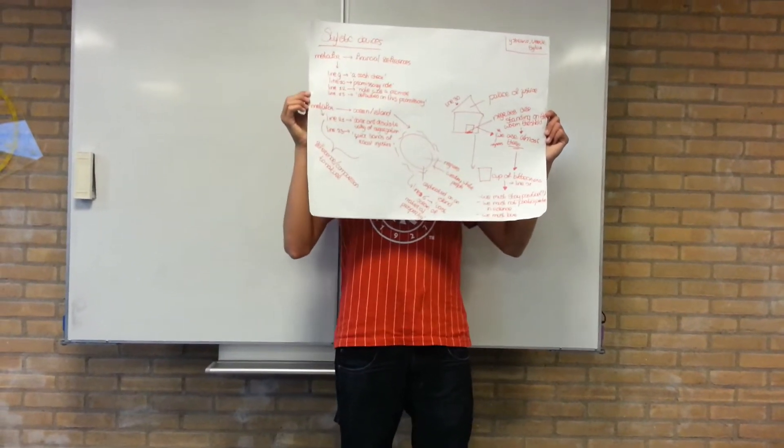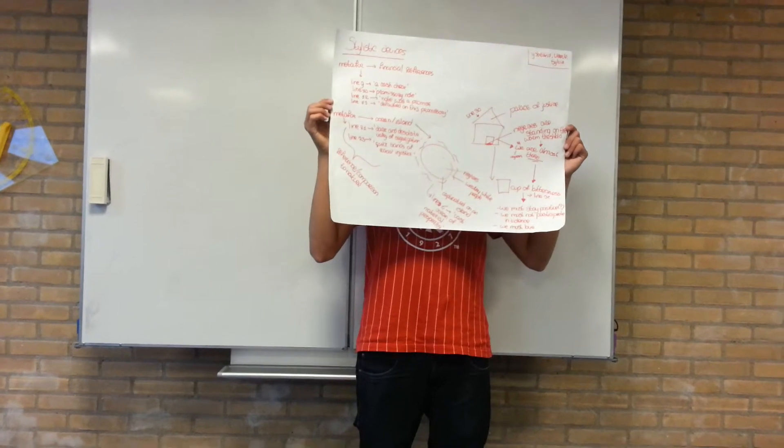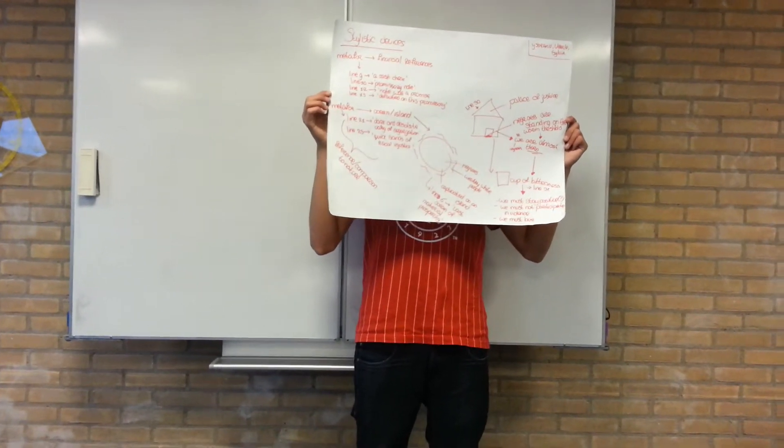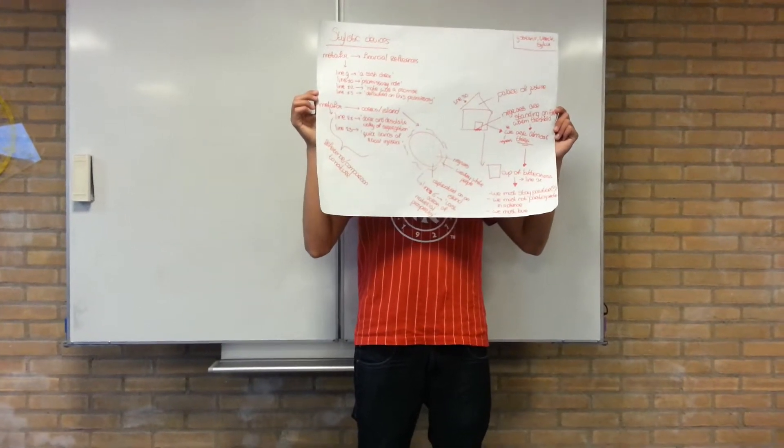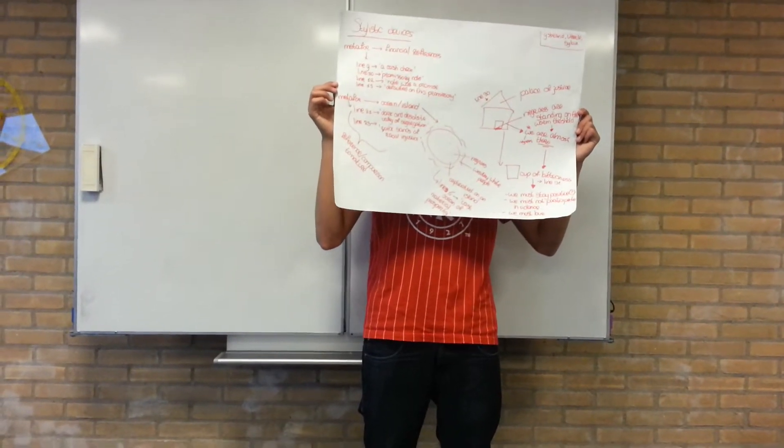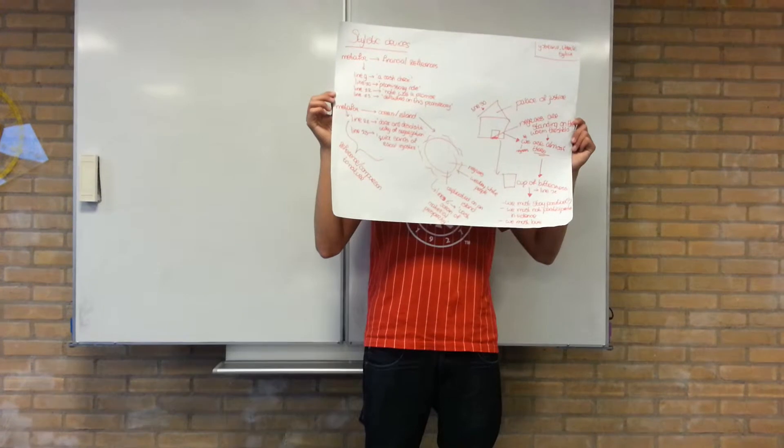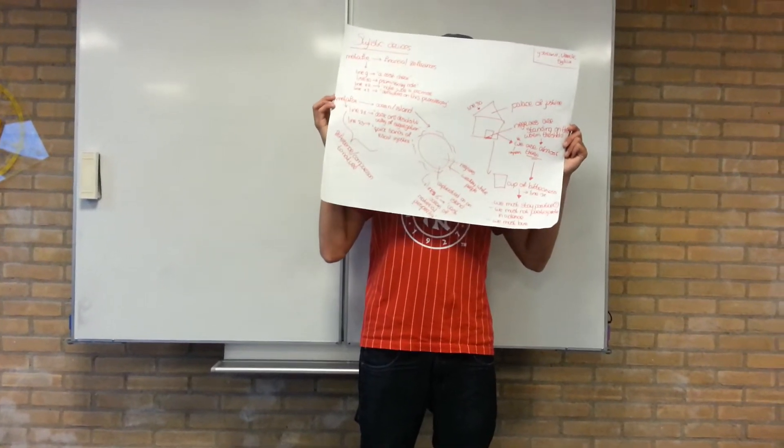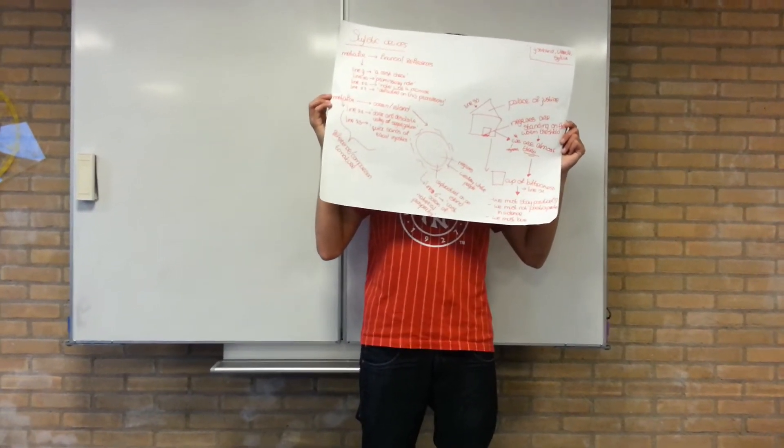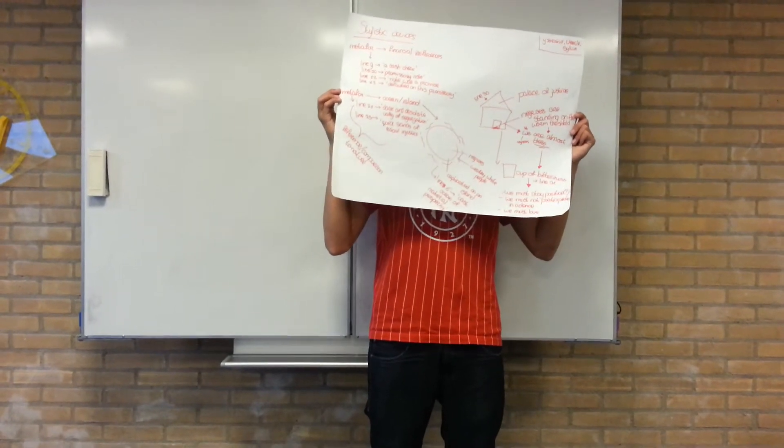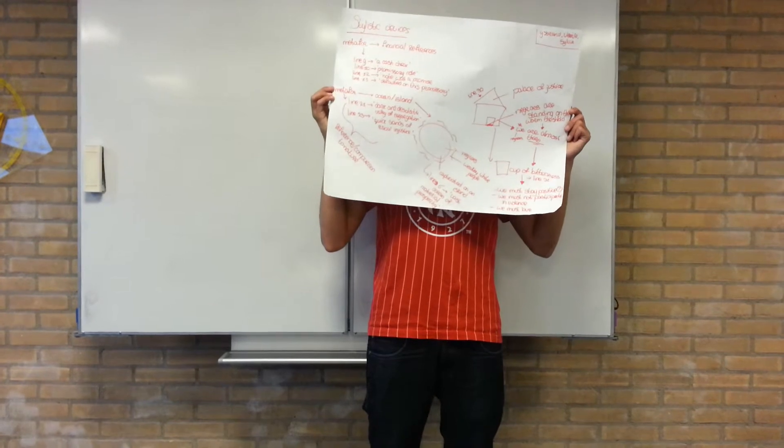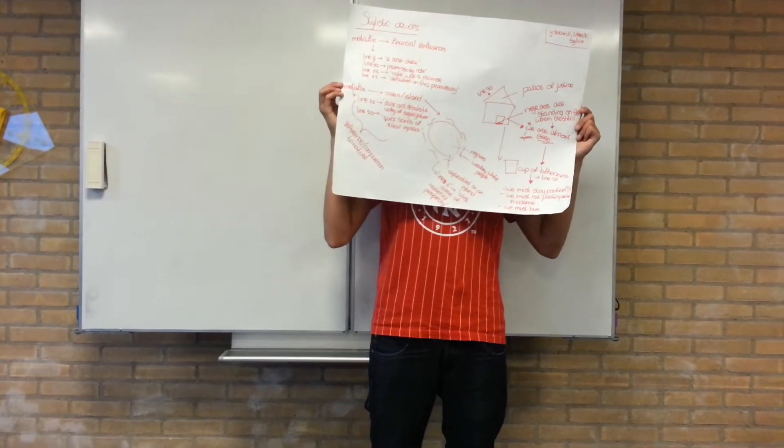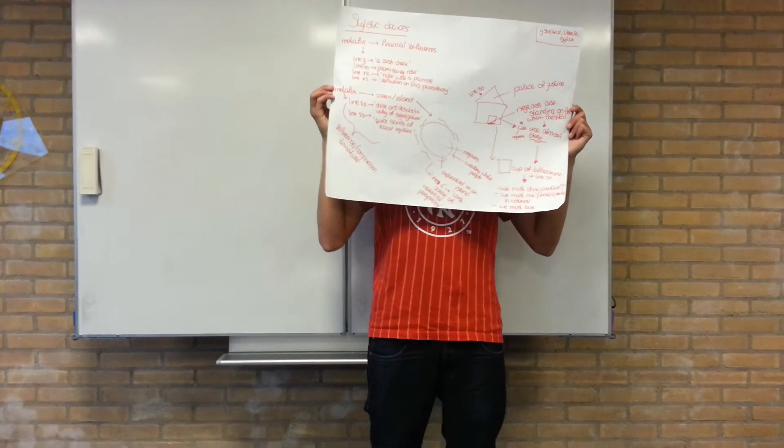So what he basically says, there is a part in line 14 where he says: America has given the Negro people a bad check, a check which has come back marked with insufficient funds. What he says is that the Negroes are not being treated right, are not being treated equal, because they got a bad check. And this reference makes people really understand what he's trying to say because he draws it more towards their own lives.